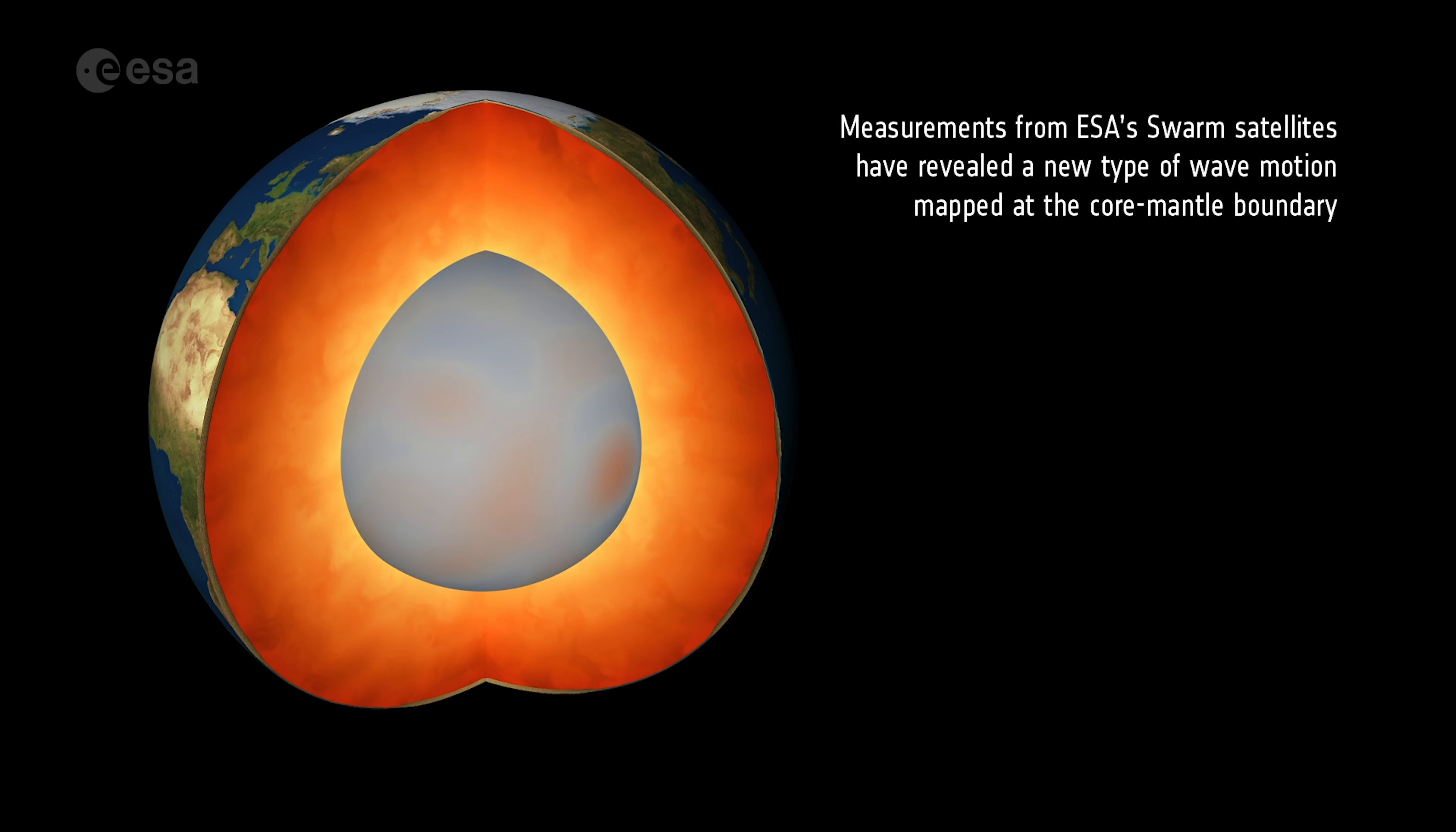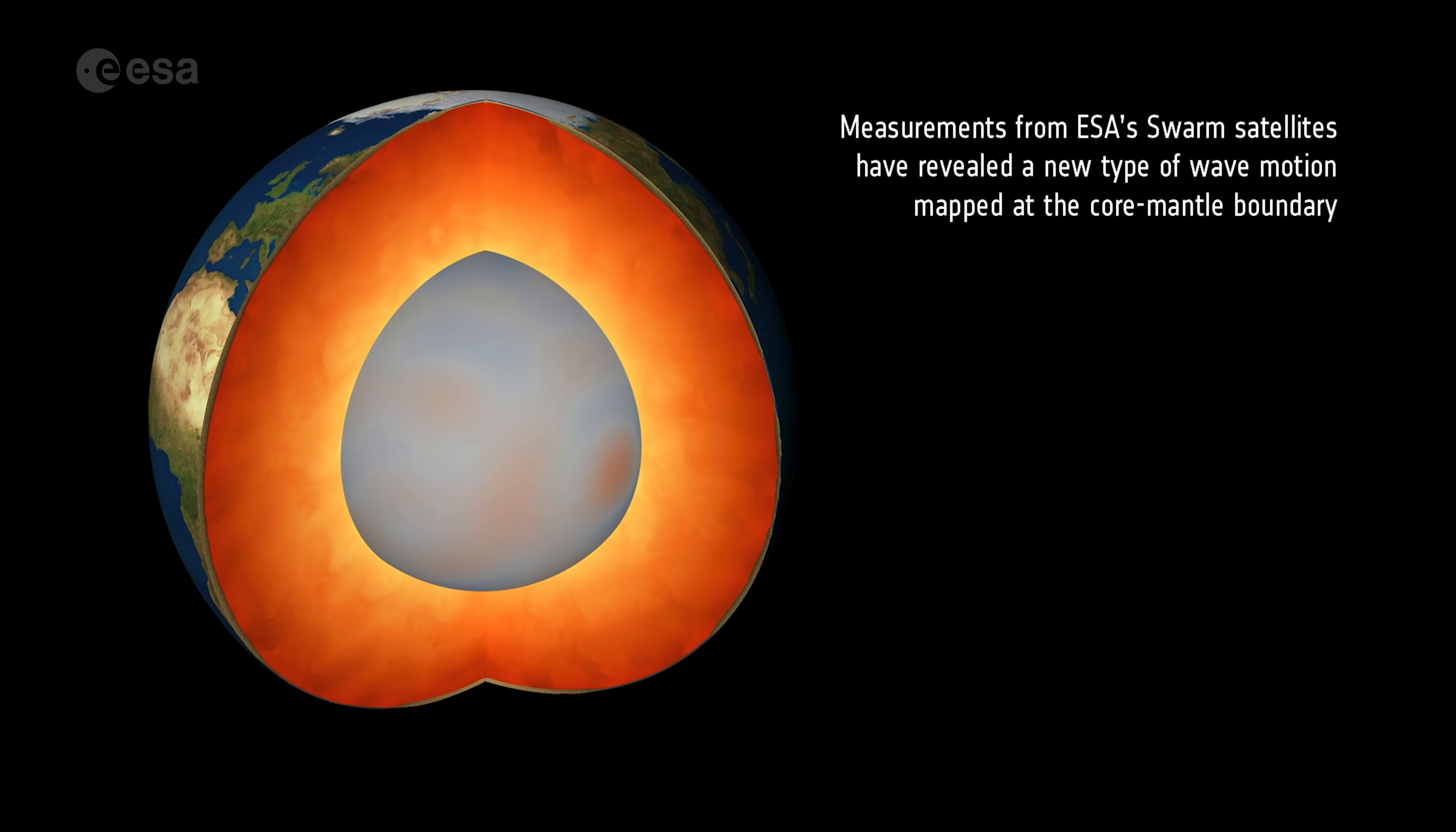By using satellites to measure fluctuations in the magnetic field, scientists are gaining new insights into Earth's interior. Unlike fixed observatories on Earth's surface, satellites can measure the magnetic field both globally and in great detail.